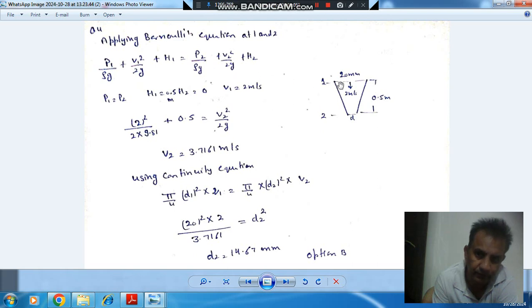Then applying Bernoulli equation: p1/(ρg) + v1²/(2g) + h1 = p2/(ρg) + v2²/(2g) + h2. h1 here is 0.5 meter and h2 is 0, taking this as base.